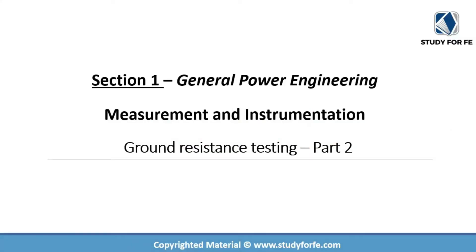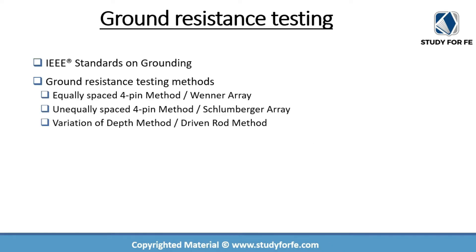Hello and welcome to part 2 of our multi-part lecture series on ground resistance testing. We will start by reviewing IEEE standards on grounding and then look at the three methods for ground resistance testing: namely the equally spaced 4-pin method or the Wenner array, the unequally spaced 4-pin Schlumberger array, and the third one is the variation of depth method, also known as the driven rod method.